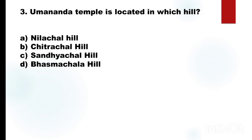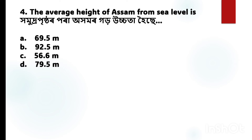Next question number 4: The average height of Assam from sea level — what is the average height of Assam from sea level? The correct answer is Option D: 79.5 meters.